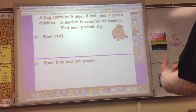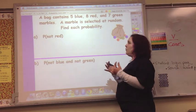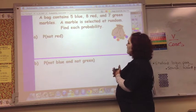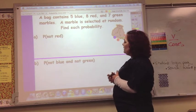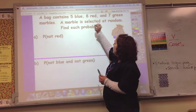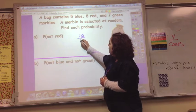Okay, so now let's look at an example with marbles. And we've got to see how many total marbles we have. So we have 5 plus 8 plus 7 is 20. And it says, what's the probability of not drawing a red?